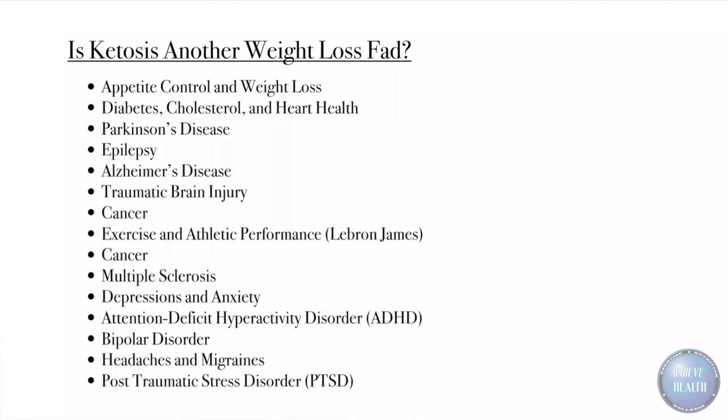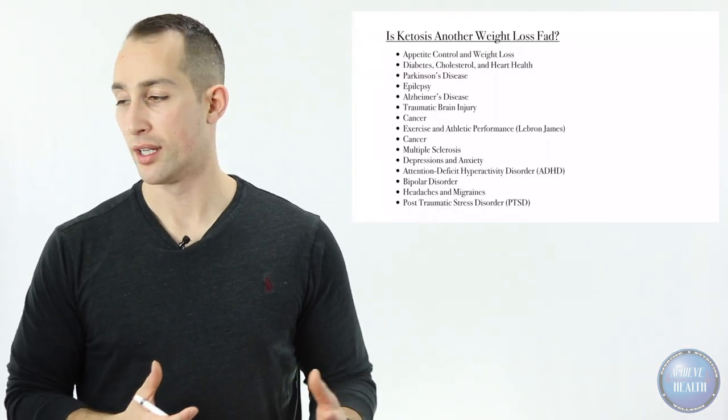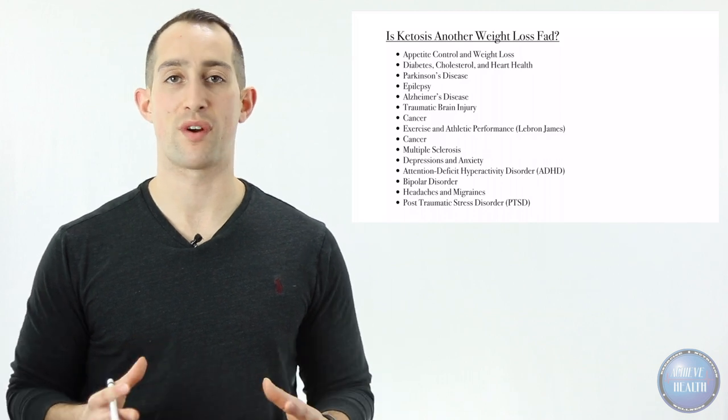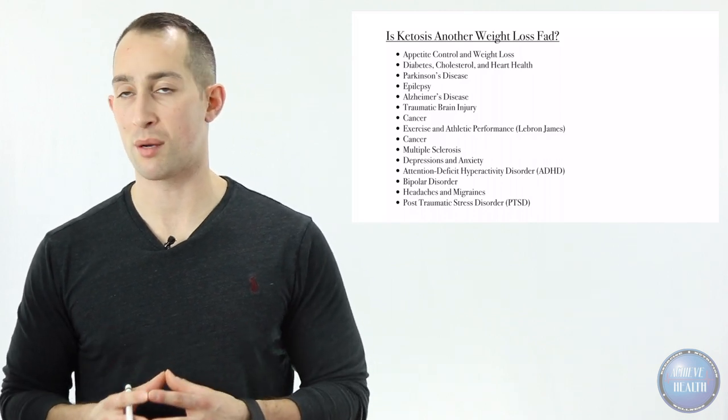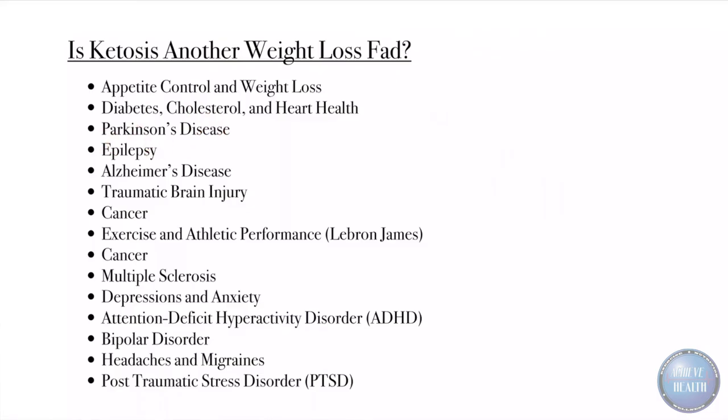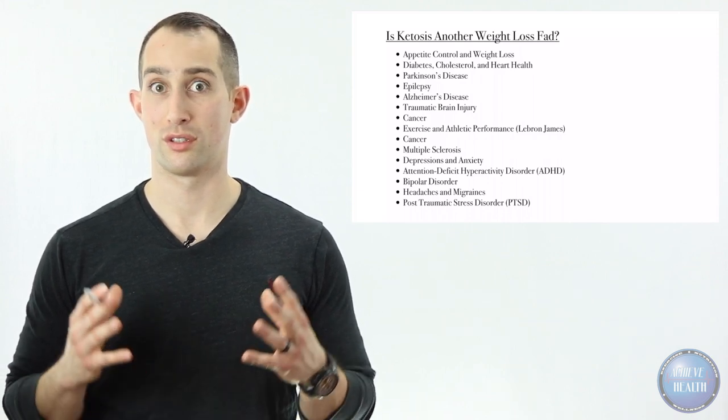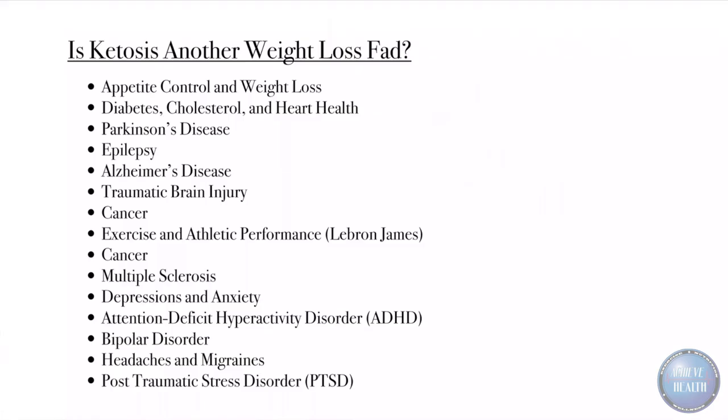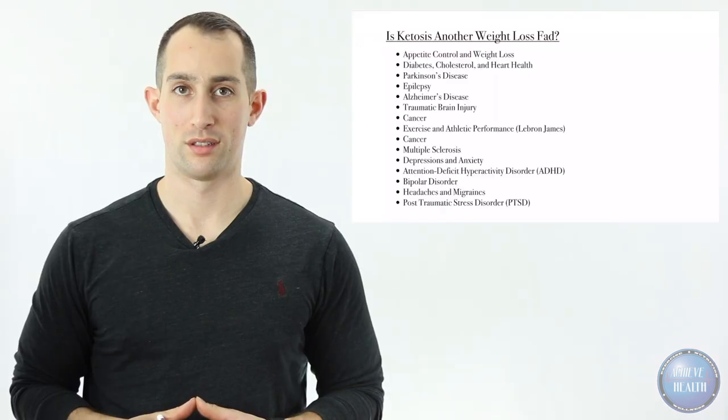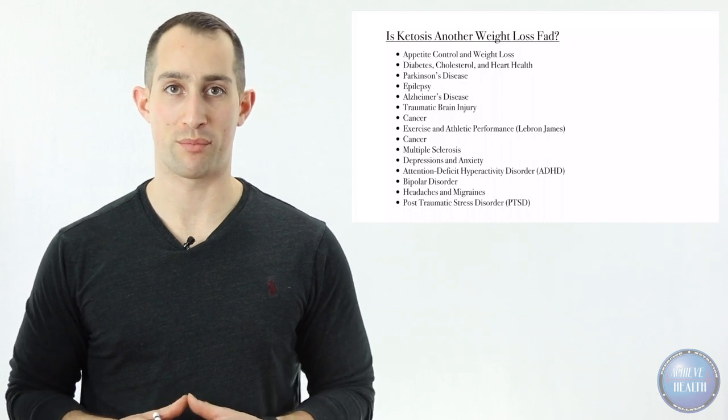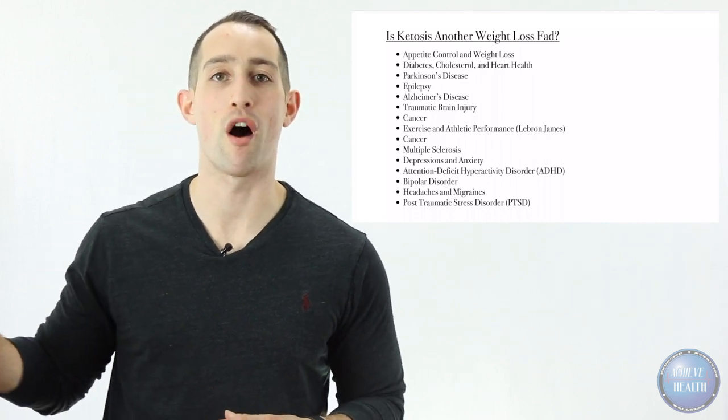Let's go through some of the things that right now ketosis is being used for. We have appetite control and weight loss, diabetes, cholesterol and heart health. These are what the world knows for ketosis to be used for. The others people don't know much about, and lots of studies around the world right now are using ketosis to treat some of these other disease states. We've got Parkinson's disease, epilepsy, Alzheimer's disease, traumatic brain injury, cancer. Sugar is a fuel source for cancer tumors. If you cut off their fuel source they don't enlarge. Exercise and athletic performance. This is being explored more and more. I put LeBron James there because, well, yeah, the best athlete on the planet. If you're a basketball fan, LeBron James is keto. Enough said.